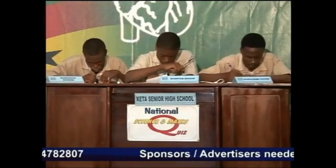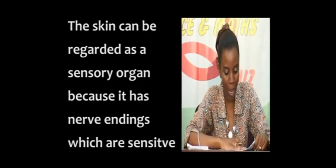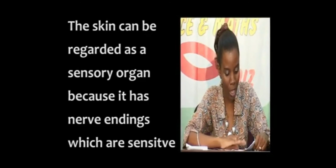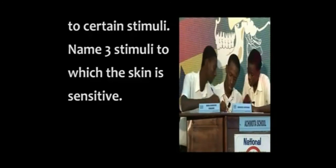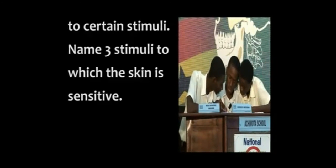Achimota School, in one attempt: the skin can be regarded as a sensory organ because it has nerve endings sensitive to certain stimuli. Name three stimuli to which the skin is sensitive. Alhassan: touch, pain, and temperature — that is hotness or coolness.